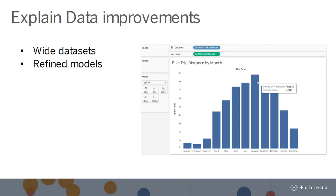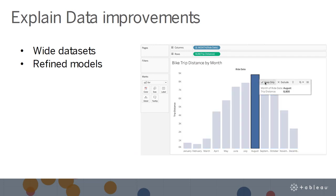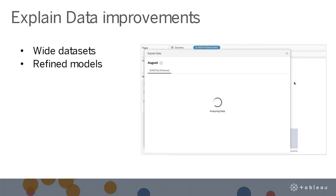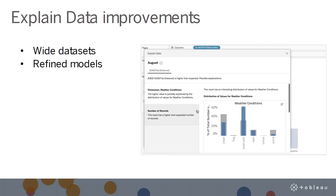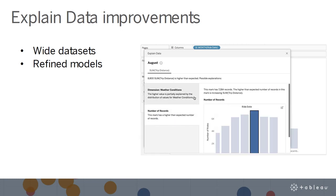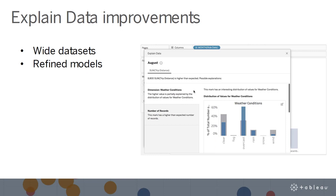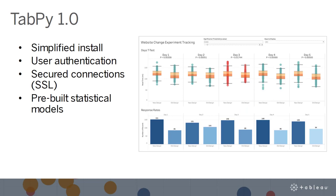In this release, we also added improvements to Explain Data, which continues to get better and better with performance improvements for wide datasets and refined models to help you go deeper into your data. Tableau's Python integration server, TabPy, is being moved to a Tableau-supported 1.0 version. This update includes a simplified install, user authentication, secured connections over SSL, and pre-built statistical models.